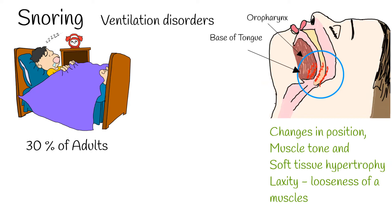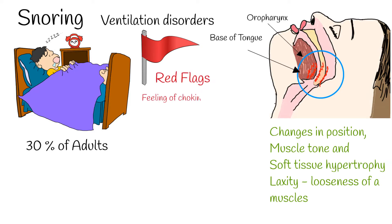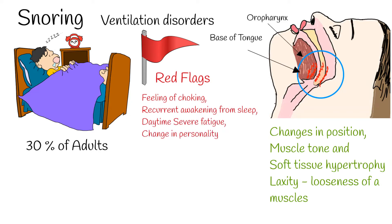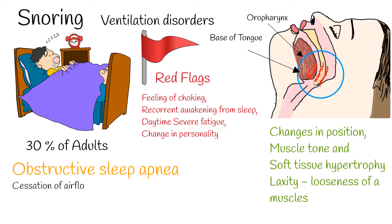Snoring can be isolated, which is mostly a social problem. But if a snorer is having non-refreshing sleep, feeling of choking, recurrent awakening from sleep, daytime fatigue, and change in personality, he or she has crossed the line of demarcation between snoring and a potentially life-threatening disease. Snoring can be accompanied with long periods of cessation of airflow, which is called obstructive sleep apnea.